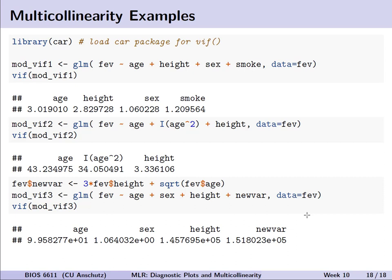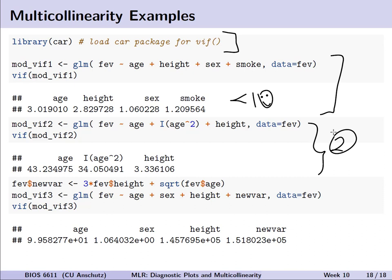Using the VIF function from the car package, we'll walk through a few examples. First, fitting the FEV dataset with all predictors — age, height, sex, and smoking status — the variance inflation factors are all less than 10, so multicollinearity is not an issue here. In a second example, we induce correlation by adding an age-squared term to the model alongside age and height.